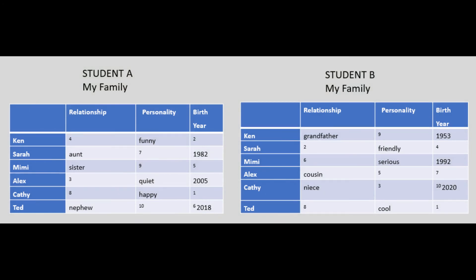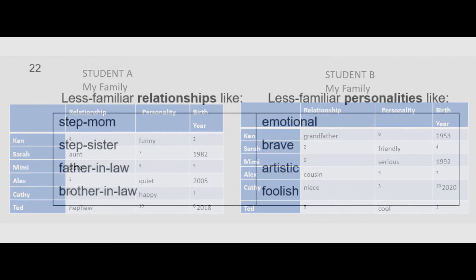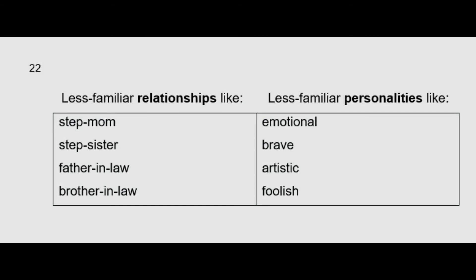Now I'd like to talk about how you can easily customize these information gap charts to have students reinforce vocabulary and continue practicing conversation strategies. In the earlier example, the categories were relationship, personality, and birth year. I made that one to review vocabulary for relationships like cousin, nephew, niece, and aunt, and for personalities like serious, cool, and funny. Later in the course I revised the chart to include less familiar relationships like stepmother, stepsister, father-in-law, brother-in-law, and personality words like emotional, brave, artistic, and foolish.